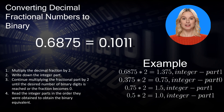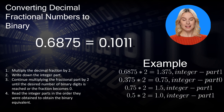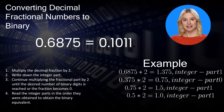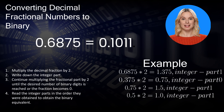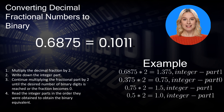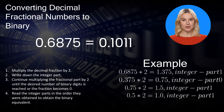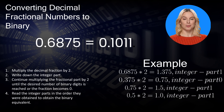Finally, let's learn how to convert fractional decimal numbers to binary numbers. This process involves multiplying by 2 and noting the integer parts. Step 1: Write down the integer part. Step 2: Continue multiplying the fractional part by 2 until the desired number of binary digits is reached or the fraction becomes 0. Step 3: Read the integer parts in the order they were obtained to get the binary equivalent. For this example, we have the decimal fraction 0.6875. Reading the integer parts in the order they were obtained, we get 0.1011. So the binary equivalent of 0.6875 is 0.1011.